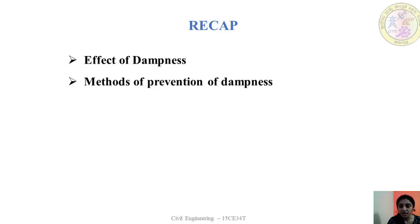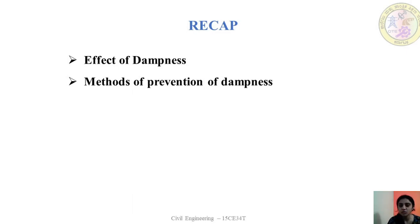Dampness also affects electrical fittings, causing leakage of electricity and short-circuiting. It softens and crumbles plaster, bleaches paint, and creates colour patches on the wall. It causes efflorescence and deterioration of bricks, stones, tiles and other construction materials. It also loosens floor covering and causes buckling and warping of wooden members. These were some of the effects discussed in the previous session.